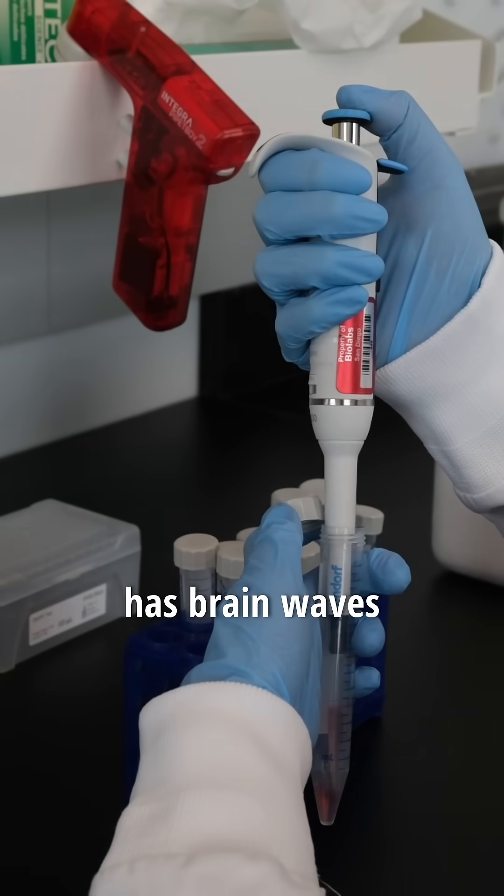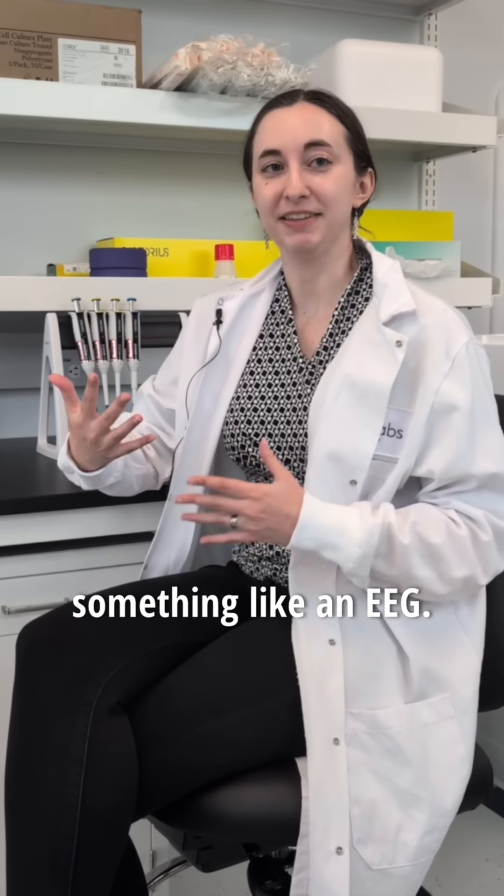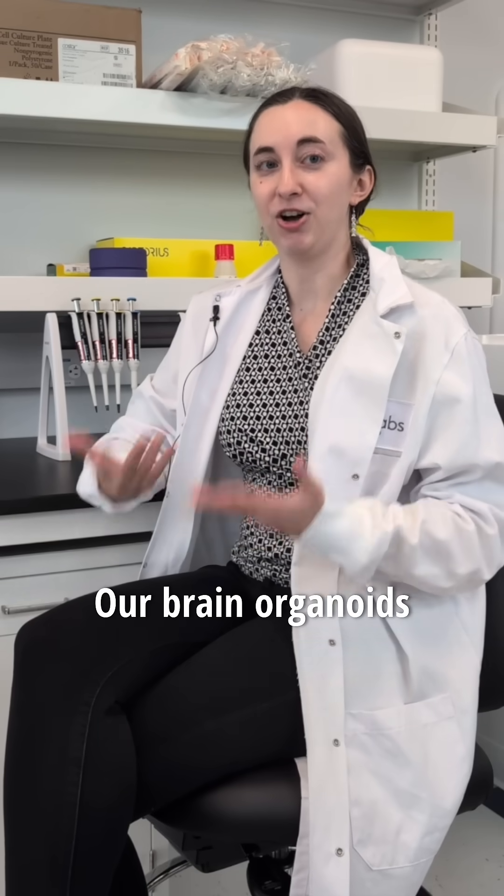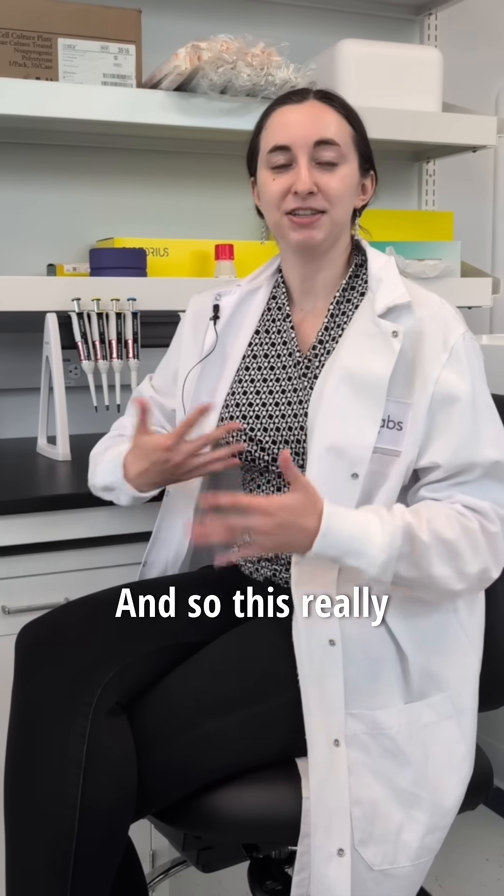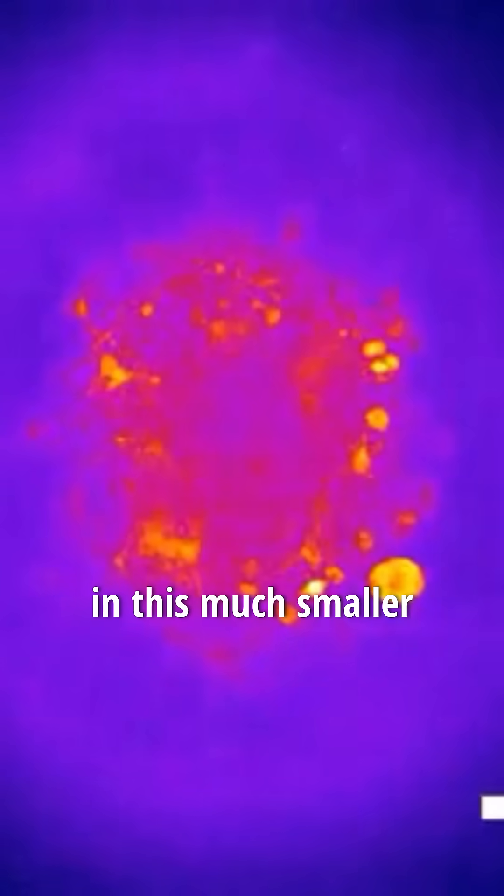So your brain for example has brain waves that you could pick up in something like an EEG. Our brain organoids also have brain waves. And so this really allows us to model the complex activity that you would see in the human brain in this much smaller model system.